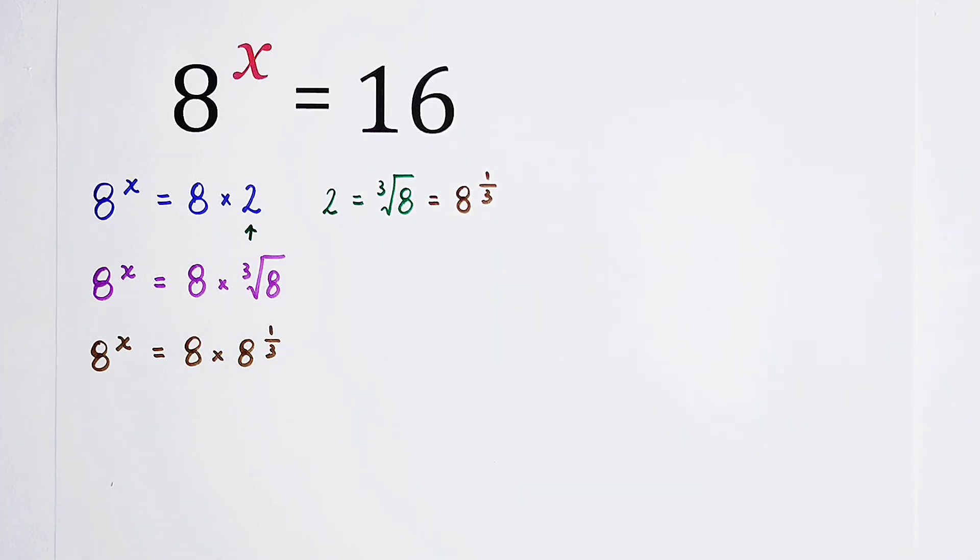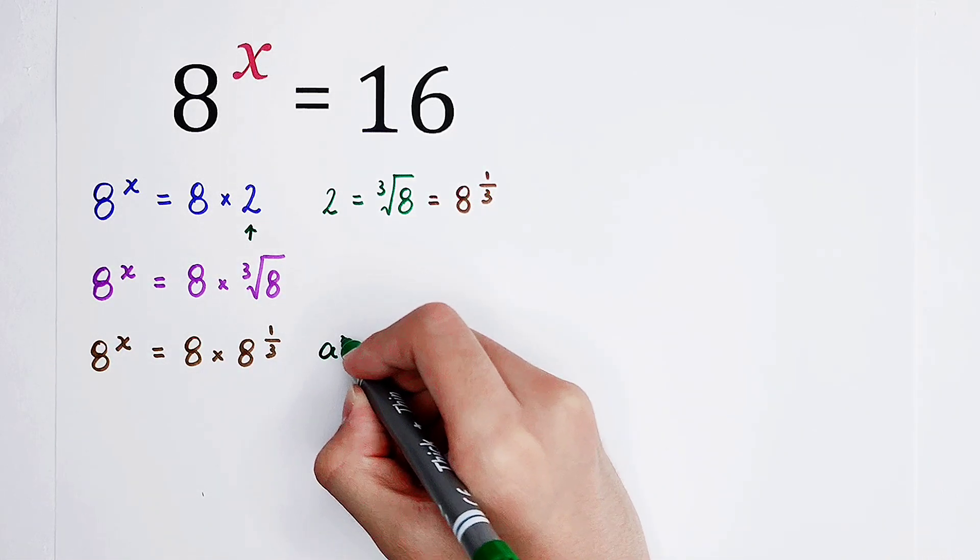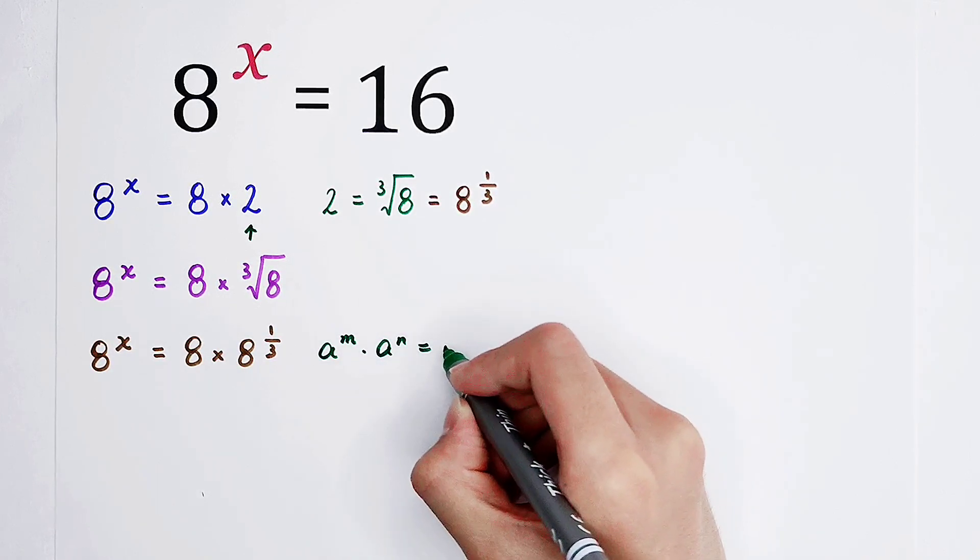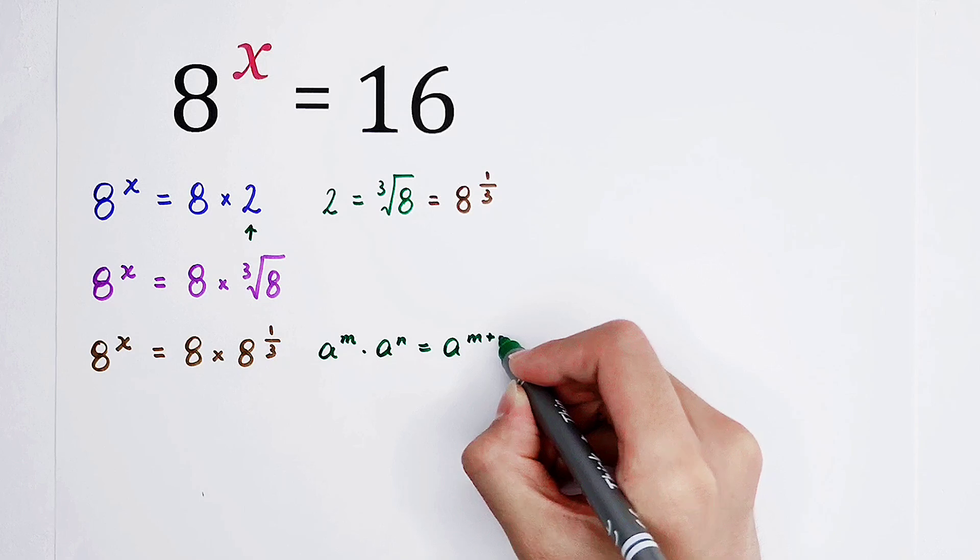The right-hand side is a little bit complicated. So we can use a formula. 8 to the power of m times 8 to the power of n is equal to 8 to the power of m plus n.